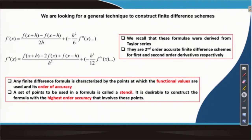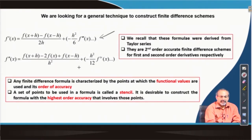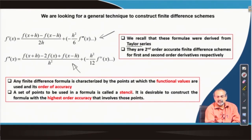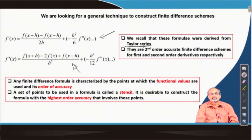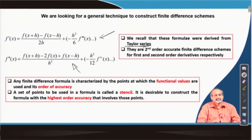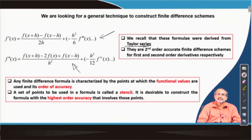You can see two formulas on this slide: one for the first derivative of a function f of x and the other for the second derivative. These formulas, as you may recall, were derived from Taylor series. We expanded the function f of x about the point x and evolved these expressions for the derivatives. Of course, they are approximations — they are finite difference approximations of the first and second derivative.